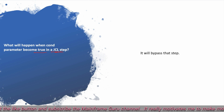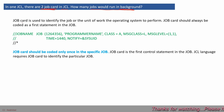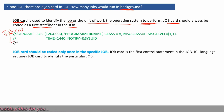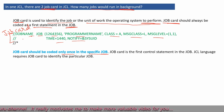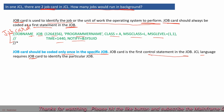What will happen when the COND parameter becomes true in a JCL step? It will bypass that particular step. If a JCL has two job cards, how many jobs would run? A job card is used to identify the job or unit of work the operating system is going to perform. Job cards should always be coded as the first statement in the job, and should be coded only once. So there cannot be two job cards in a JCL.